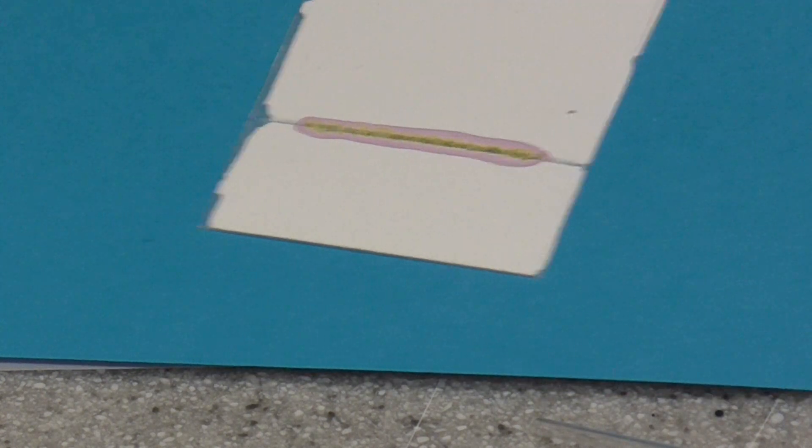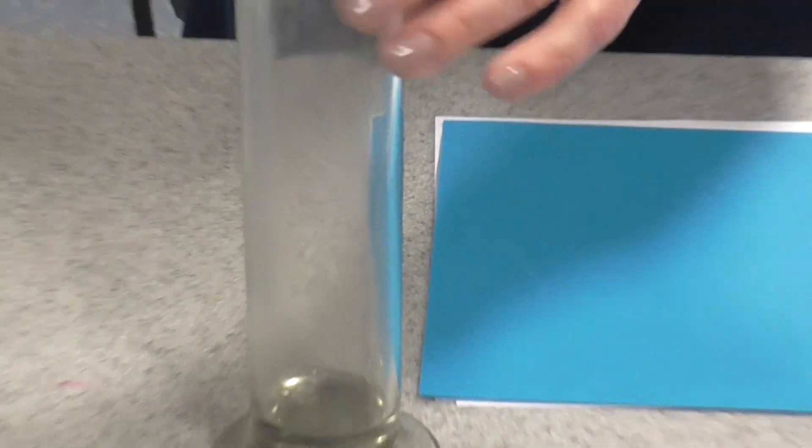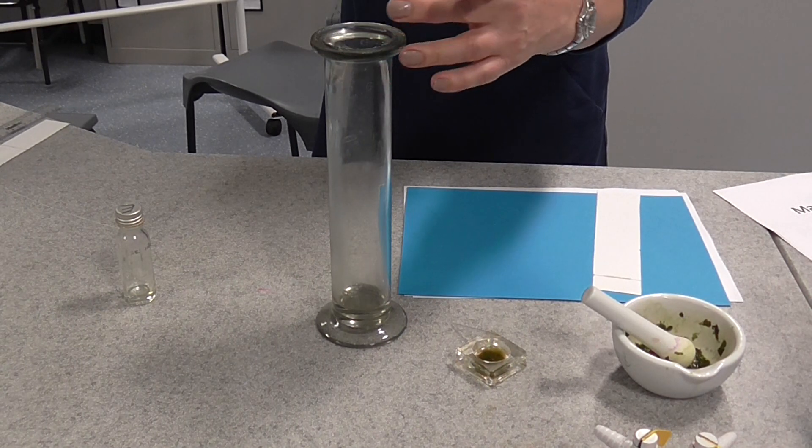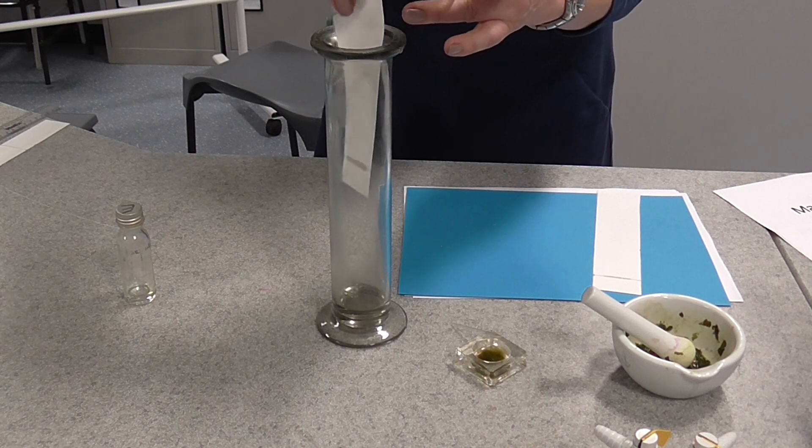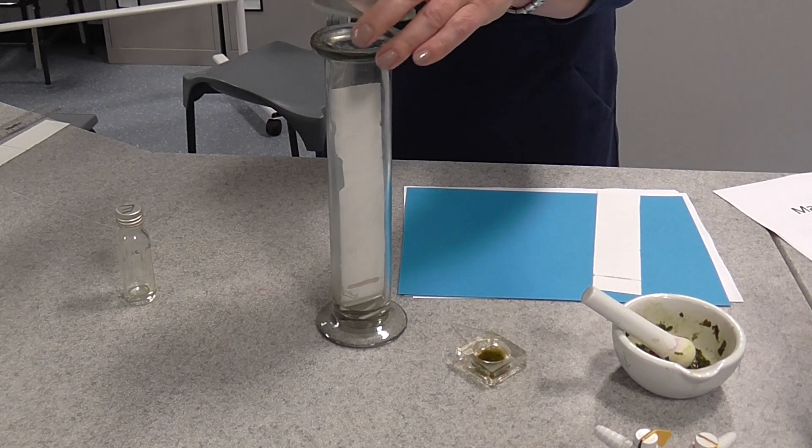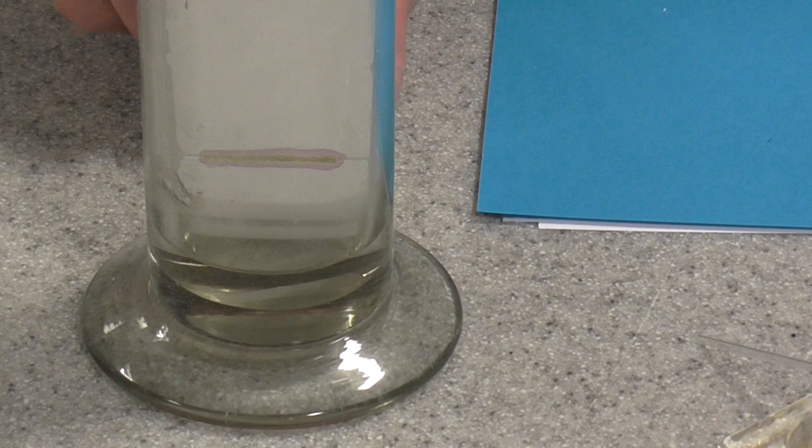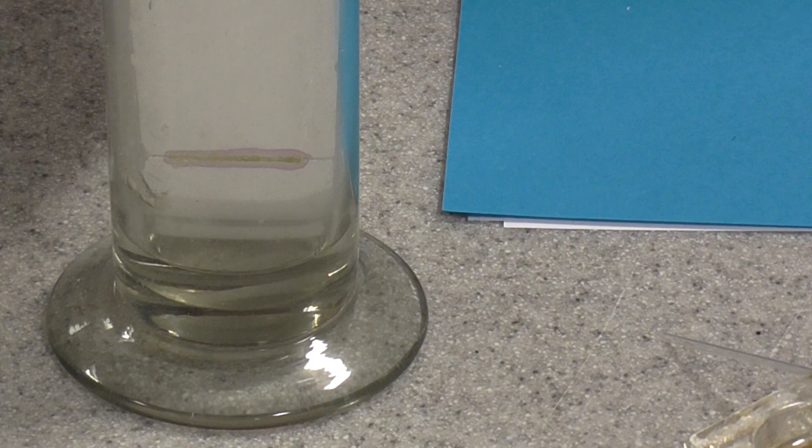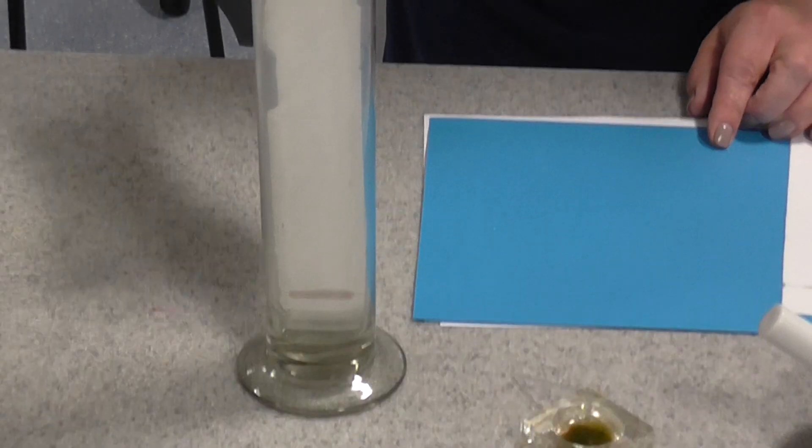Once you've done that and it's dried, you can place that inside the gas jar with the solvent. It's better if it doesn't touch the side. You're then going to leave that on the bench top and you're going to see the solvent slowly soak up the TLC plate and carry the pigments with it.